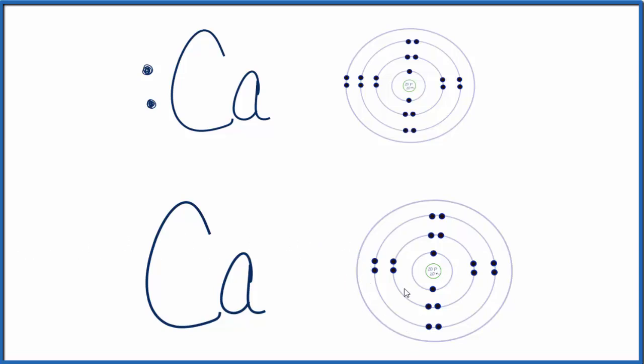So now we have calcium 2+, and this highest energy level, there's nothing in it. So for our Lewis structure, we can just have Ca2+, and that's the Lewis structure for calcium ion.